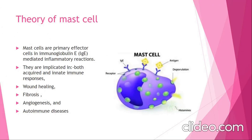Now we will see the theory of mast cells. Mast cells are the primary effector cells in immunoglobulin E-mediated inflammatory reactions. They are implicated in both acquired as well as innate type of immune responses like wound healing, fibrosis, angiogenesis and autoimmune diseases. When we see the mast cell, it has surface receptors, and those surface receptors are attached to the antibody that is immunoglobulin E, and it has cross-linking to the antigen.